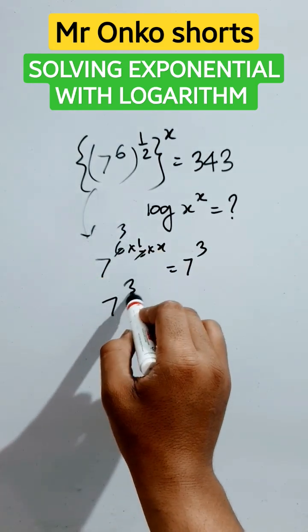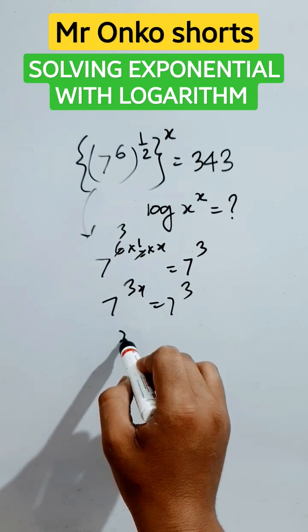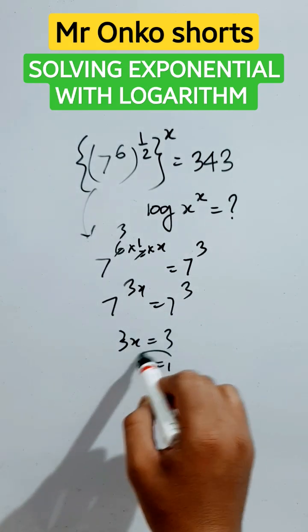7 raised to the power 3x equals 7 raised to the power 3. The bases are equal, it's an equation. So 3x equals 3, so x equals 1.